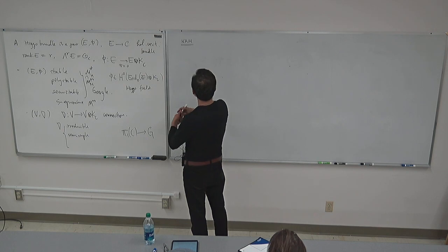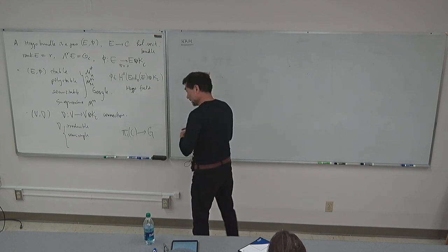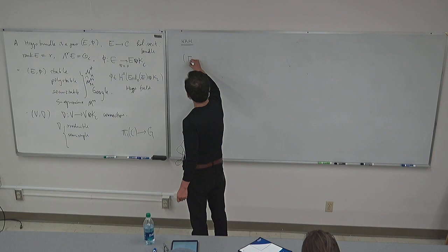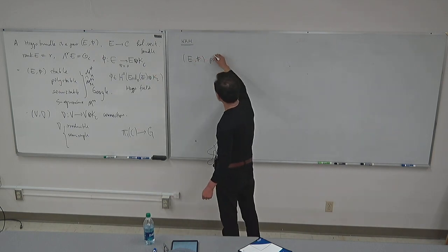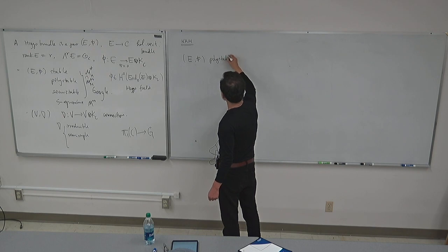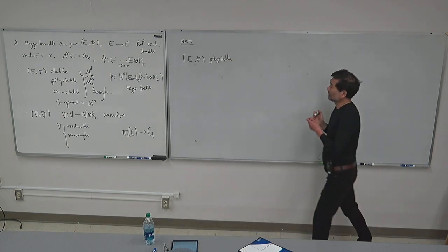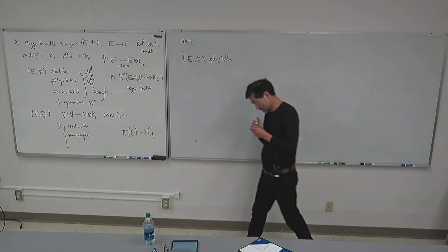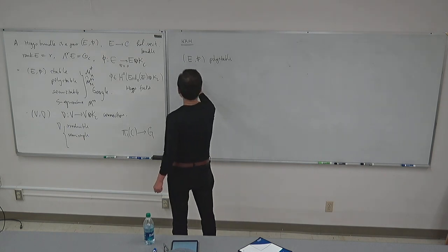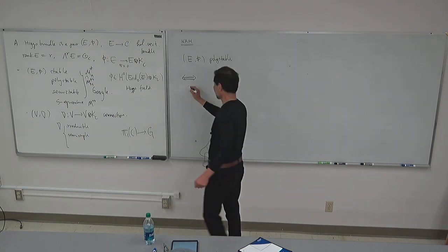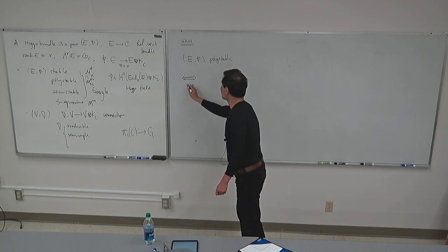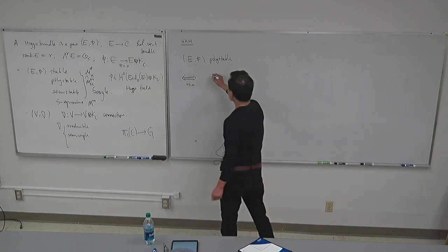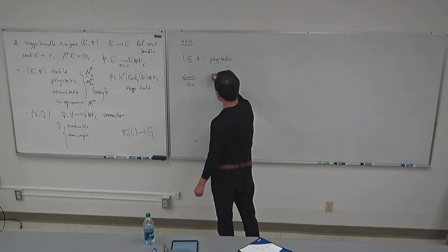To explain that, there is Hitchin's discovery. That (E, φ), a poly-stable object — meaning it is isomorphic to a direct sum of stable objects — then, and this is a theorem not a definition, this is equivalent to saying that you can choose a Hermitian metric H — a Hermitian fiber metric in a topologically defined vector bundle E. Whenever you have a complex vector bundle and a Hermitian metric, there is a unique Chern connection. Chern connection means it's unitary.